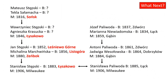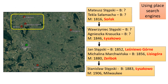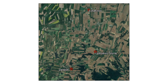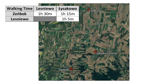Returning to the two family lines joined in Milwaukee, what can maps tell us about the Stemski family? Using the place search engines just covered, here are the Stemski family places, which are in the vicinity of Ciechanów, with a particular concentration in the Wiśniewo, Leżnevo Górna, and Dzienbok region. It appears the Stemskis were around Sońsk in the early 1800s but moved north of Ciechanów in the mid-1800s, and the families in that region all lived within easy walking distance.